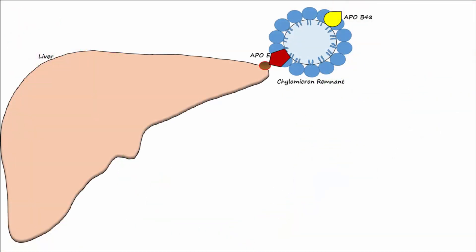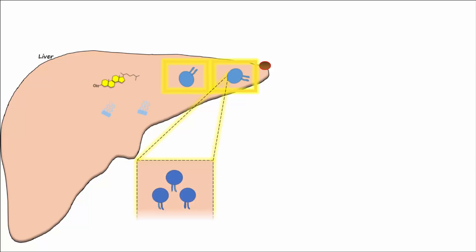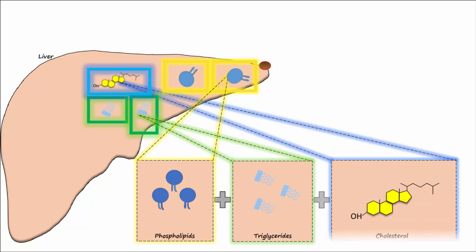The chylomicron remnant is then taken into the liver and disassembled. The components that made up the chylomicron remnant will serve as the core ingredients for a new lipoprotein. The phospholipids, leftover triglycerides, and cholesterol are all combined to make a lipoprotein known as VLDL.